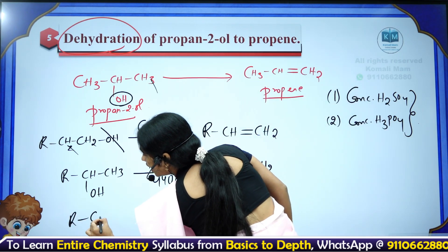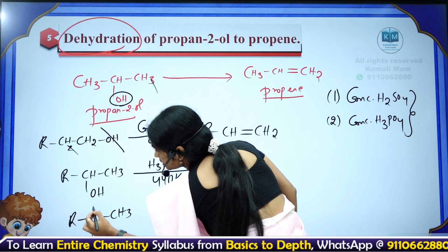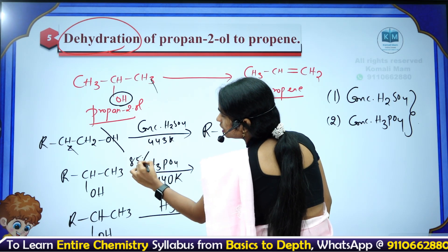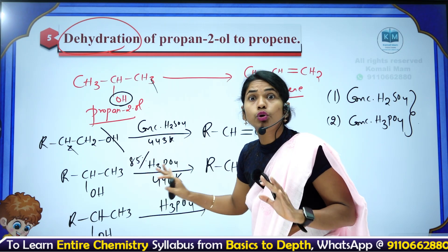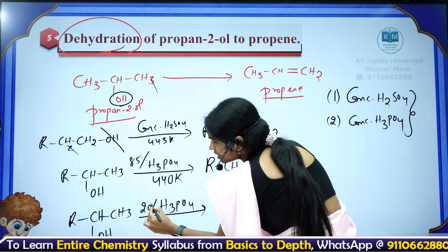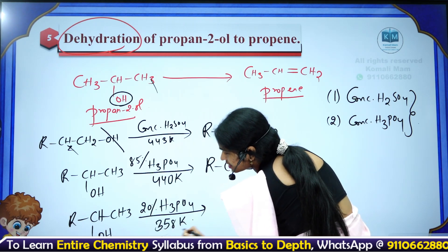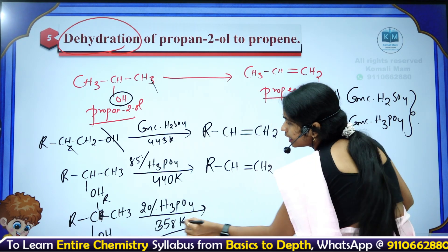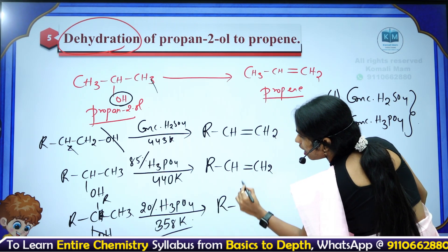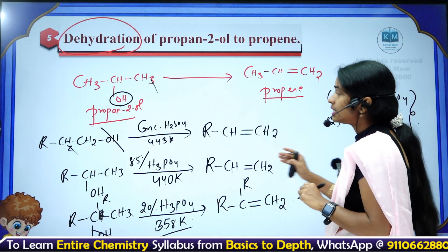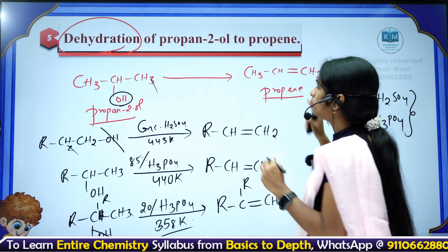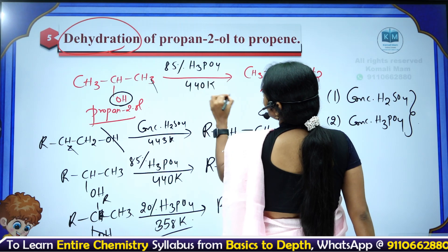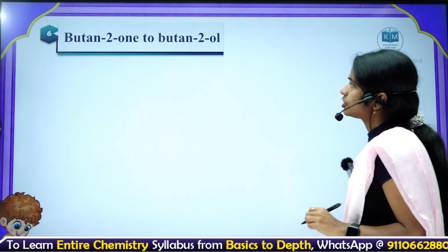For tertiary alcohols, even 85% H₃PO₄ is sufficient — no need for full concentration — and around 358 K temperature is enough, since tertiary alcohols are more reactive than secondary, which are more reactive than primary. For the question asking secondary alcohol (propan-2-ol) to propene, 85% phosphoric acid at around 440 K gives the best product.